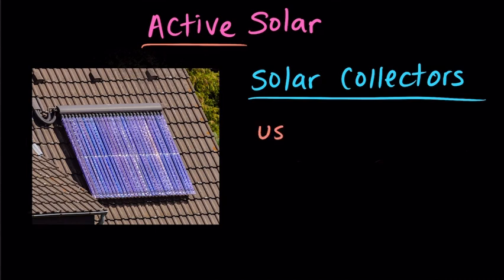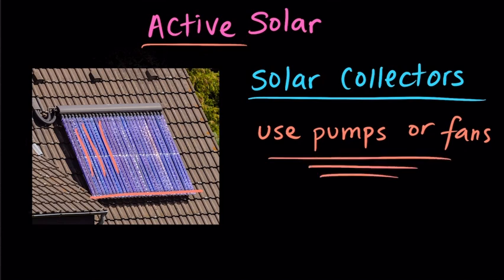These solar collectors work by heating up a fluid inside of them and then use pumps or fans to circulate that fluid and transfer heat into the home to warm up the air or water in the home. So the use of these pumps or fans to move the heat into the home is what makes this active heating rather than just passive.